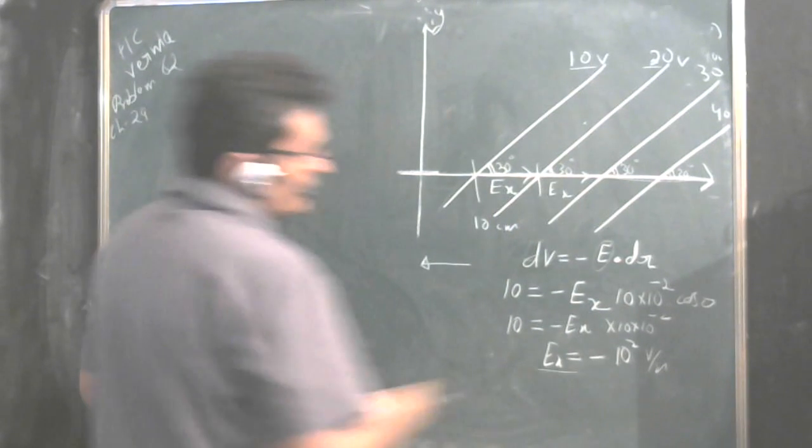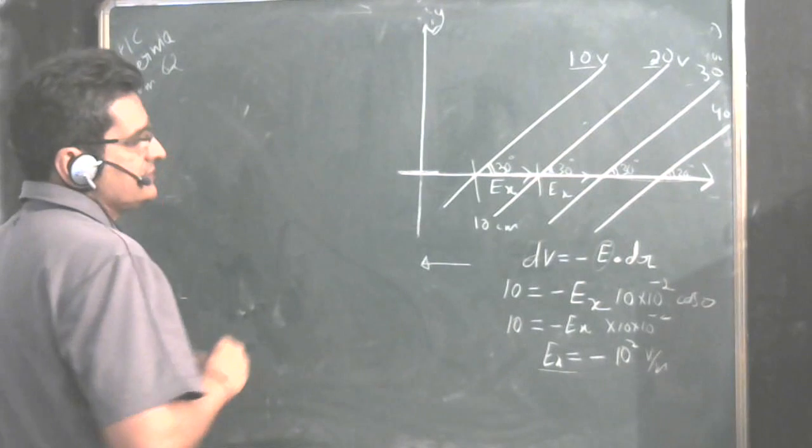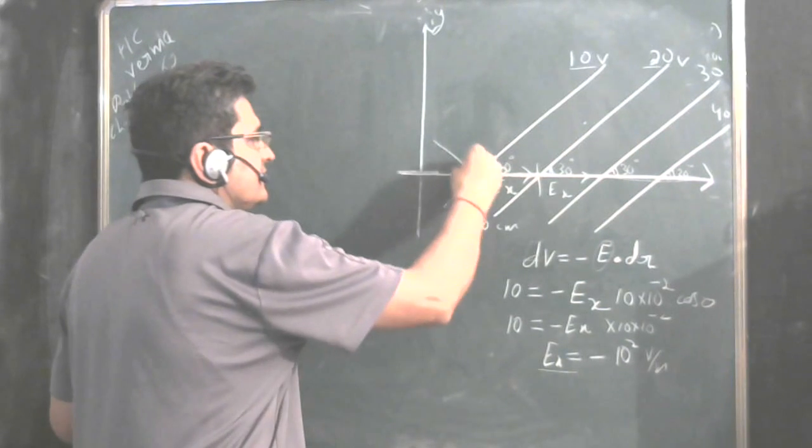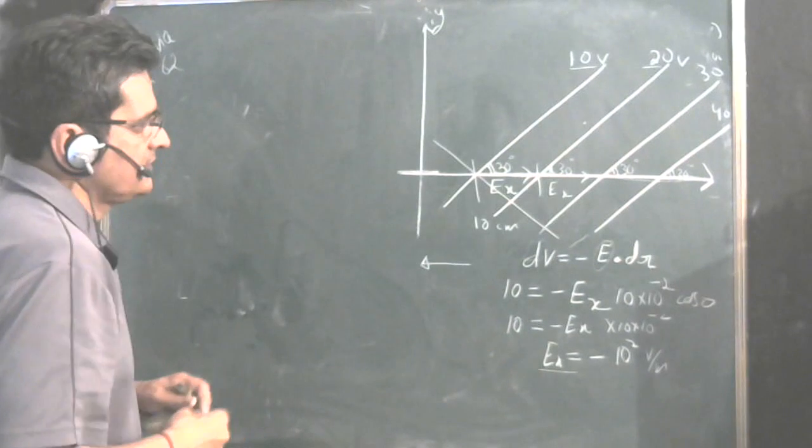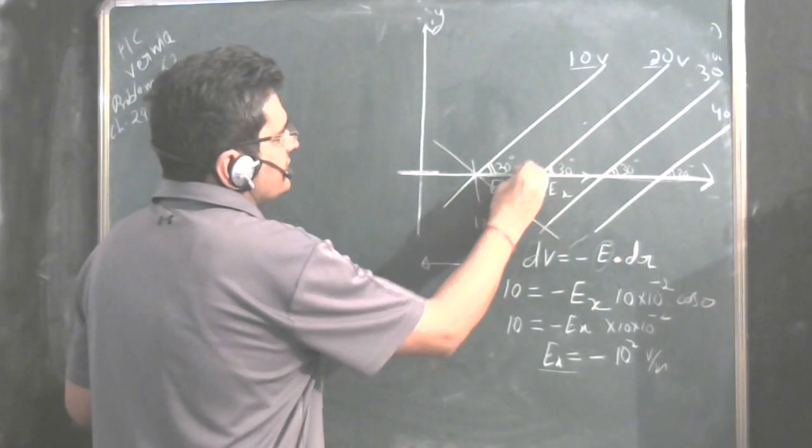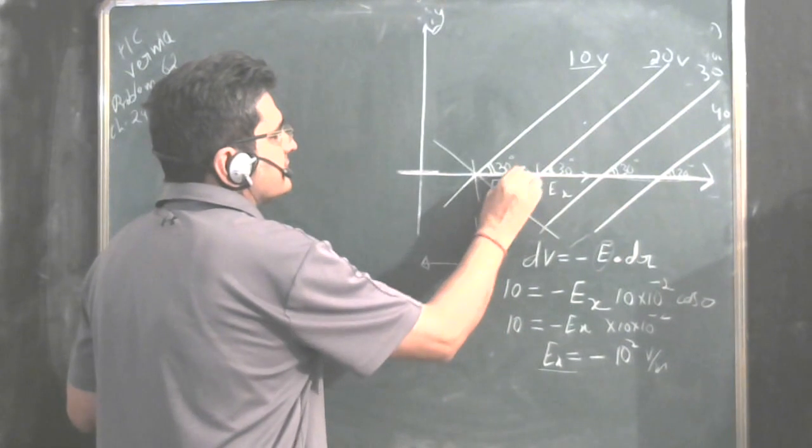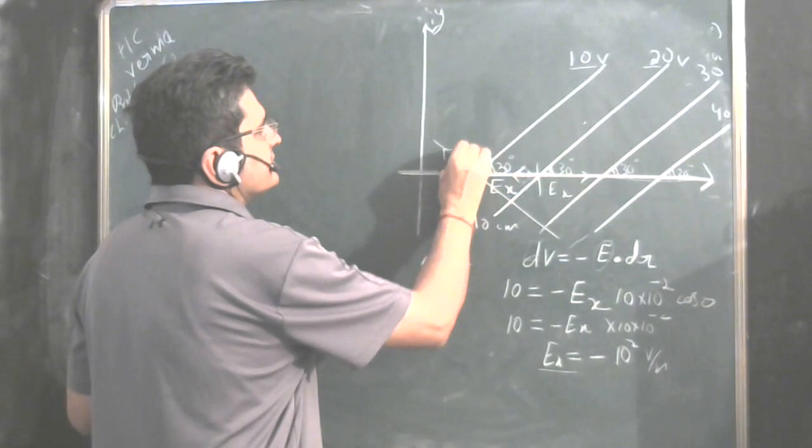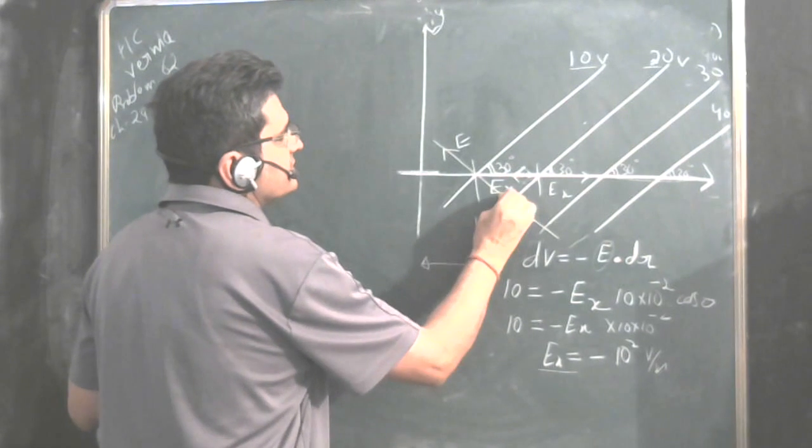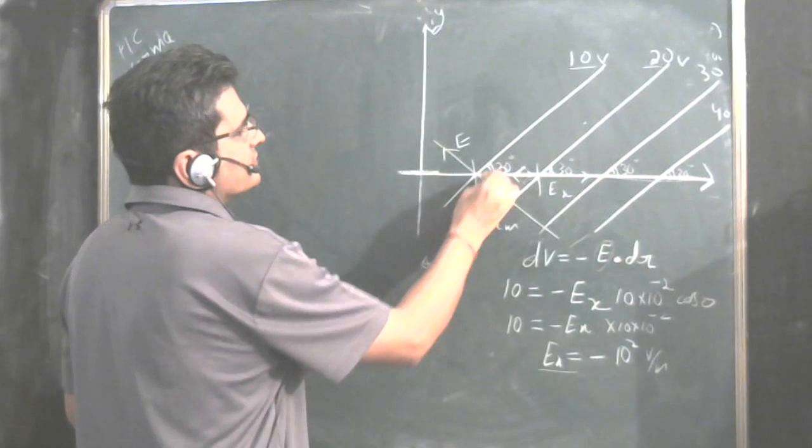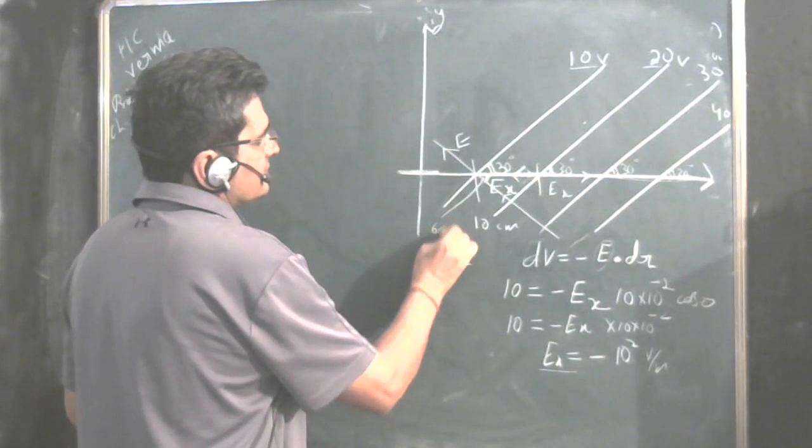What is the value of Ex? We know that electric field has to run normal to the equipotential lines. So if Ex direction is this, electric field direction is this. What is the value of Ex? Take the component of electric field along this. This is 60 degrees.